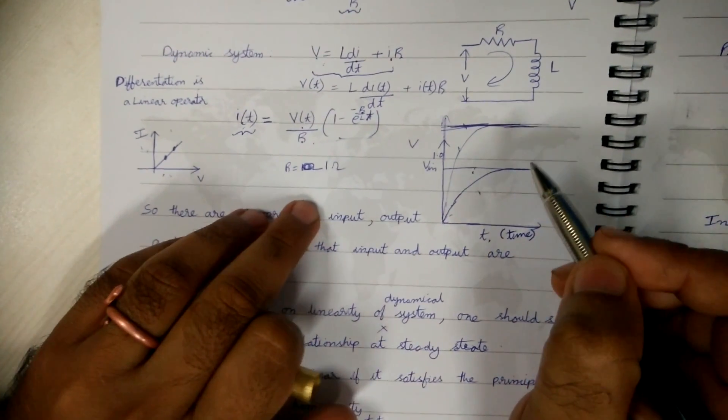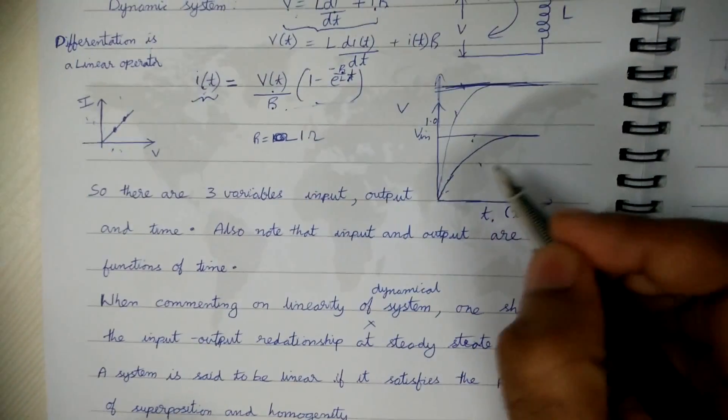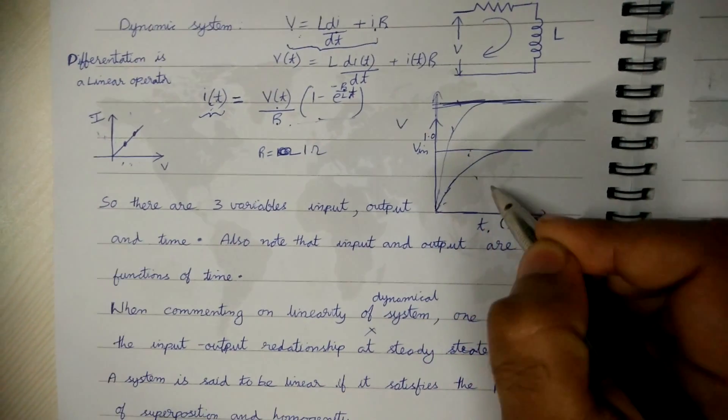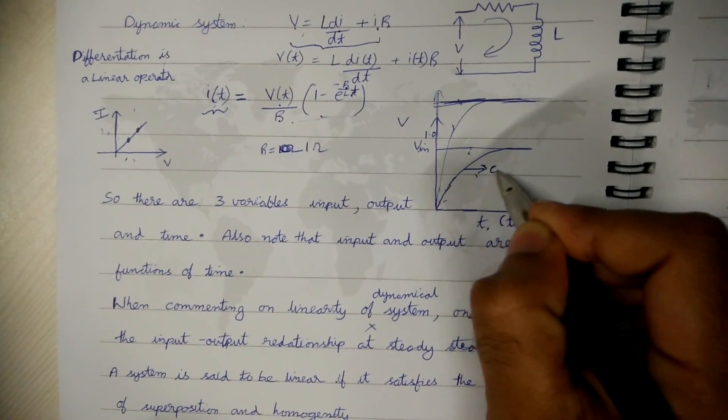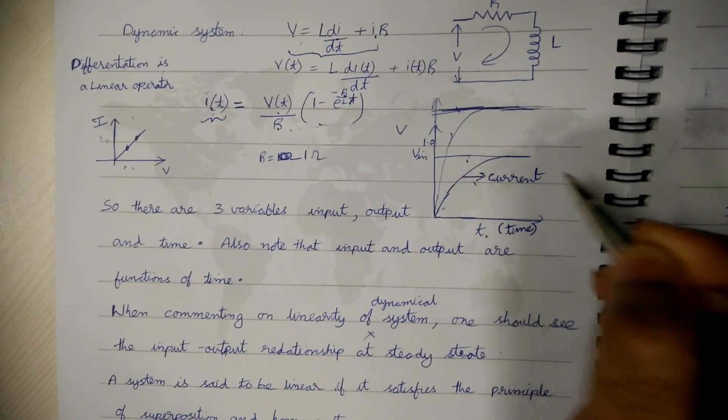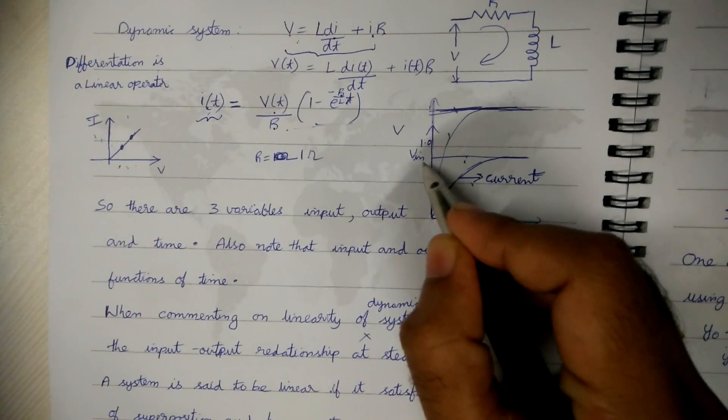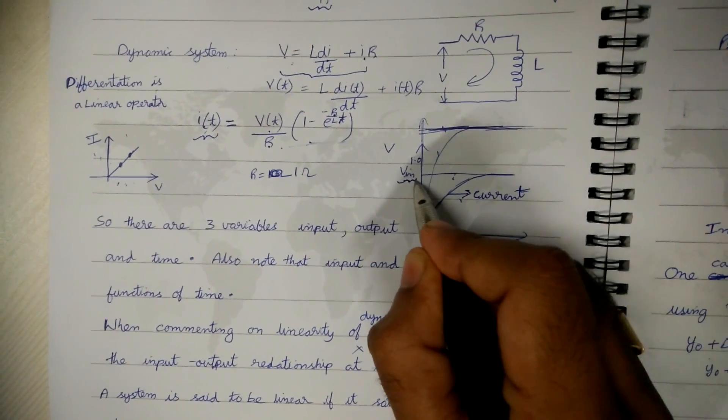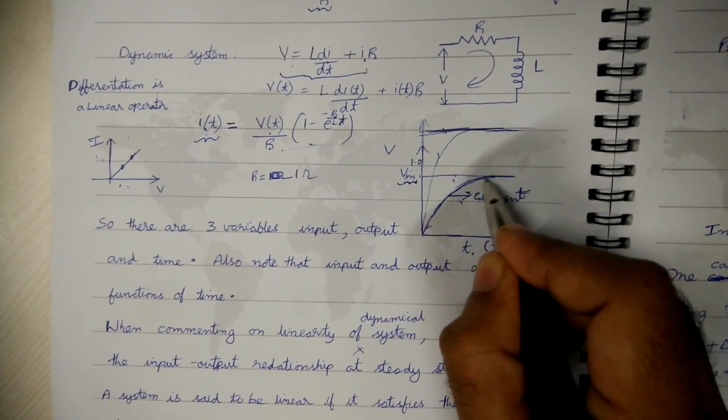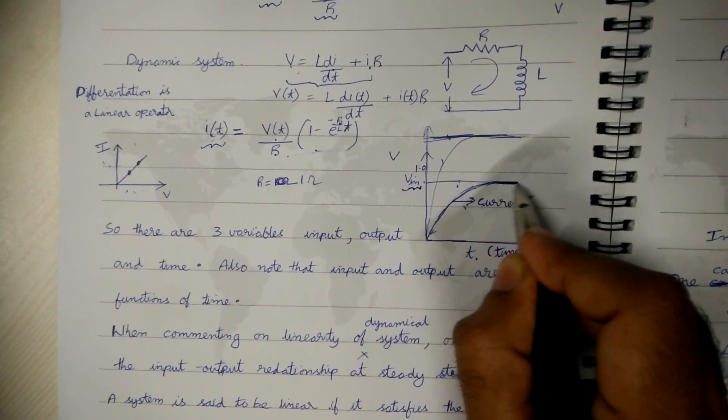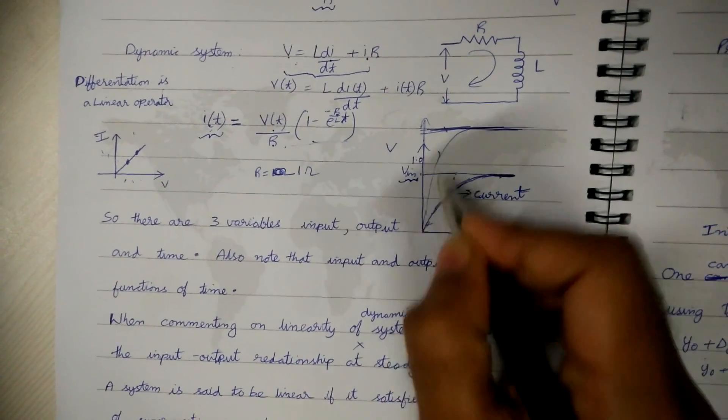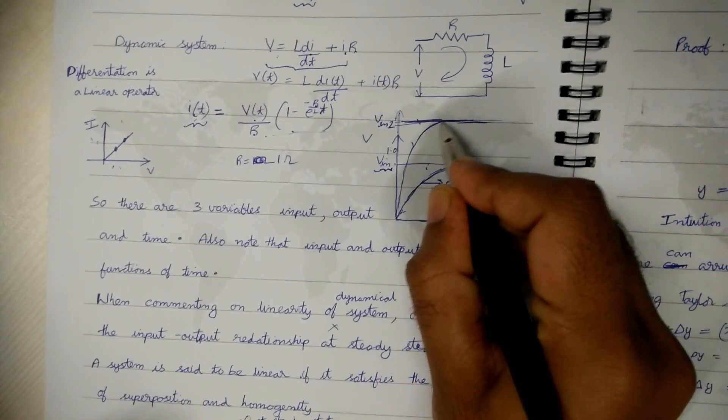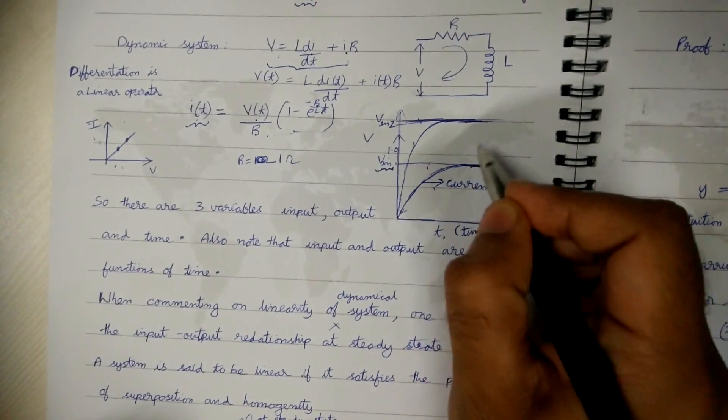So at steady state if we plot the response of current with respect to time for a particular value of step input voltage V1, at steady state the current will settle down to another value.